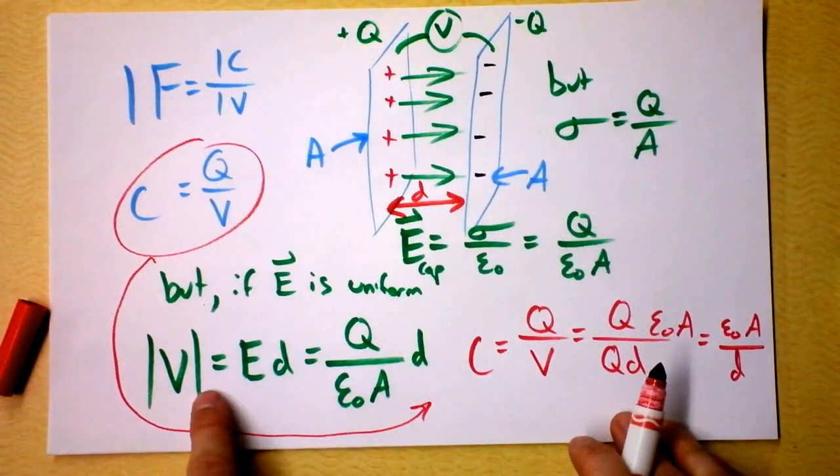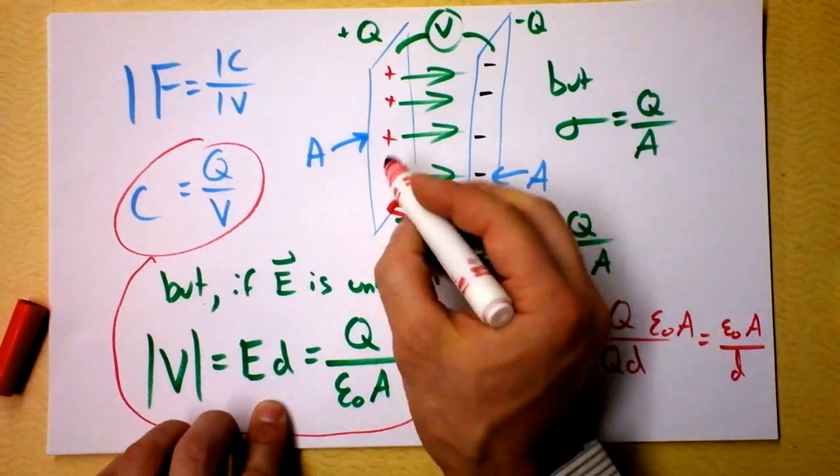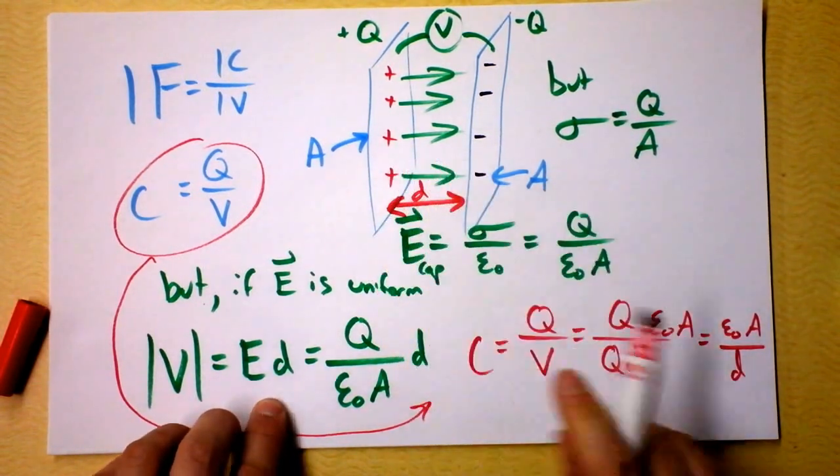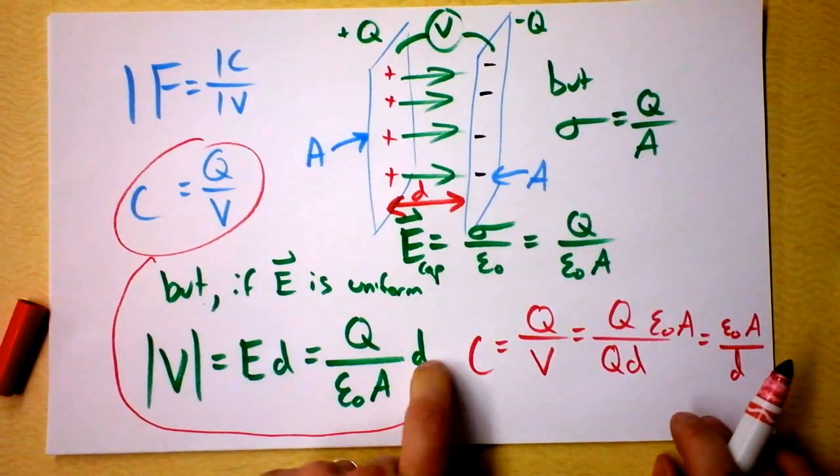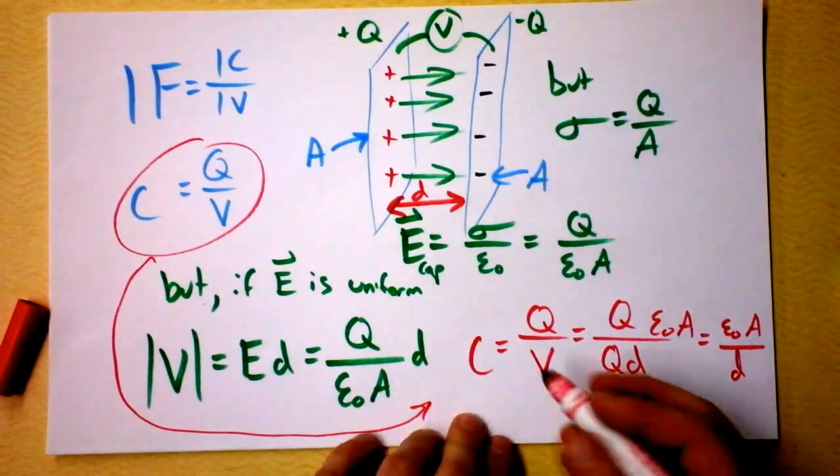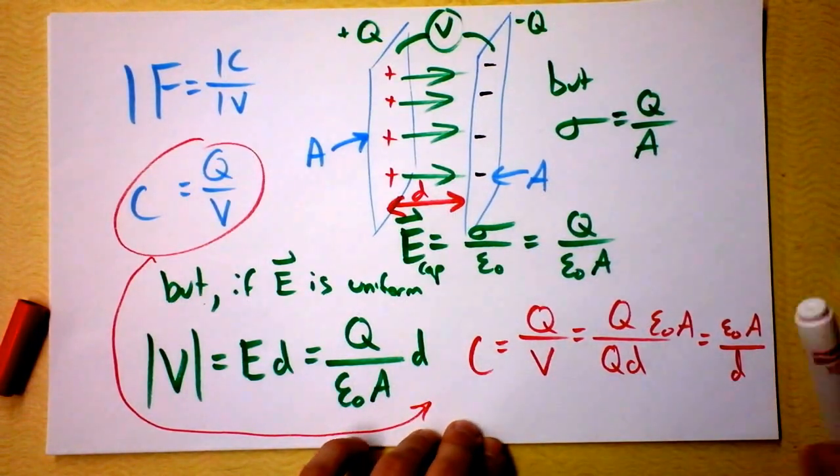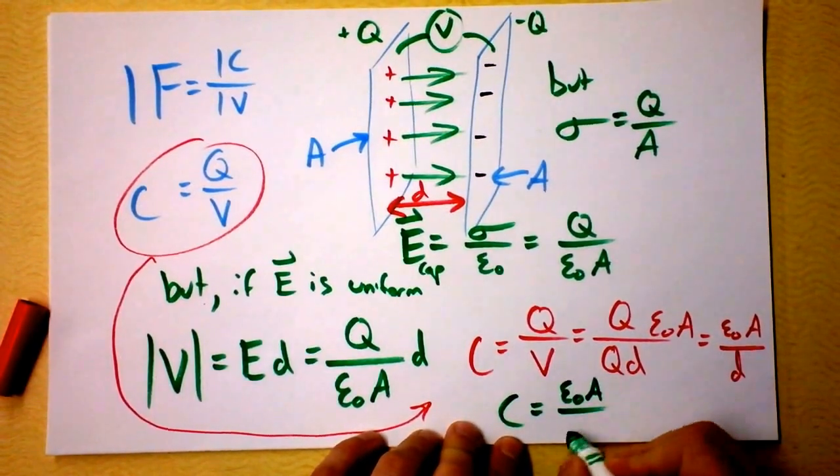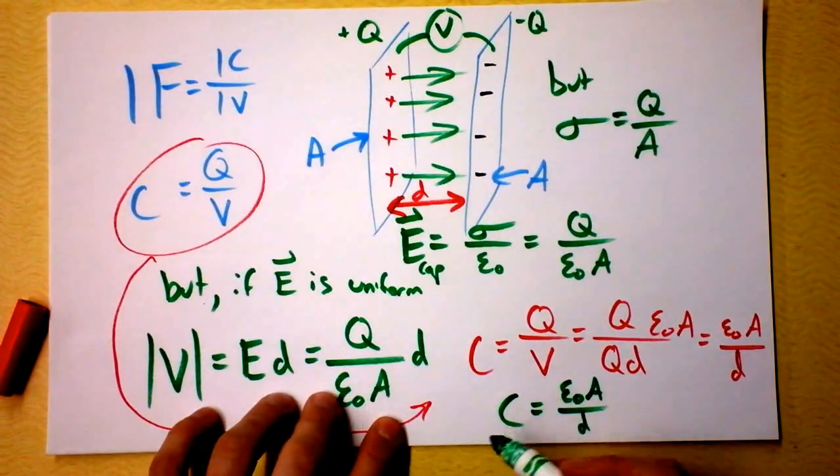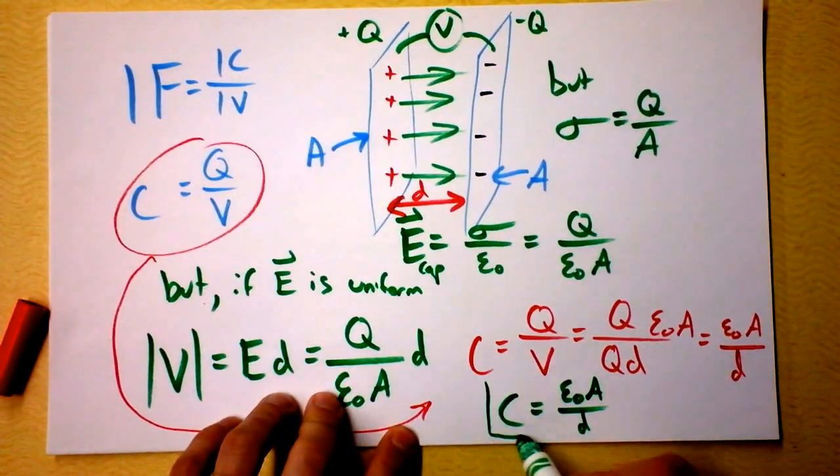As we do this voltage integration right here, we're going to be adding more and more electric field, and so we're simply going to find the difference, the distance between the two plates to be that distance right there. And this is the simple expression for the capacitance of a parallel plate capacitor. And it's an excellent place to end for the day.